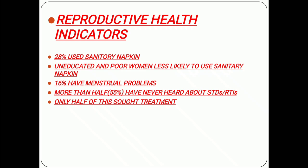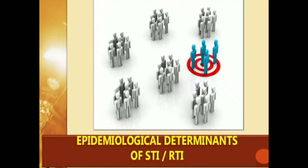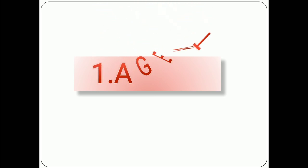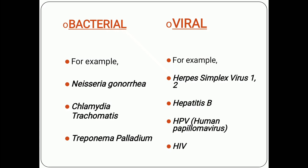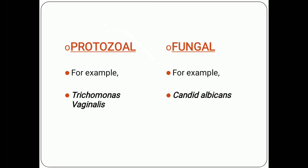Moving to the epidemiological triad, which is a three-tier model consisting of agent, host, and environment. The agent refers to the main cause. The major causative agents include bacteria such as Neisseria gonorrhoeae, Chlamydia trachomatis, and Treponema pallidum; viruses like Herpes Simplex Virus, Hepatitis B, HPV (Human Papilloma Virus), and HIV; protozoa like Trichomonas vaginalis; and fungi like Candida albicans.